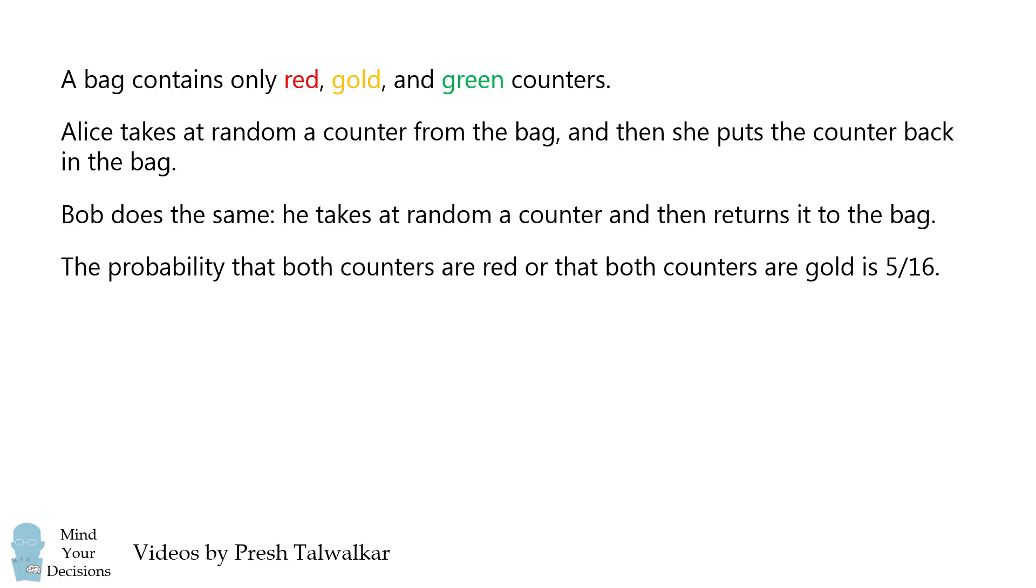The probability that both counters are red or that both counters are gold is 5 over 16. The probability that the first counter is red and the second counter is not red is 1 over 4.